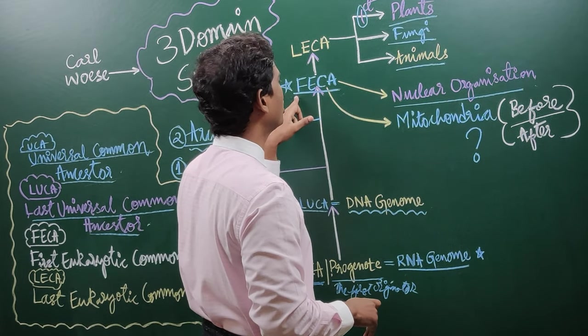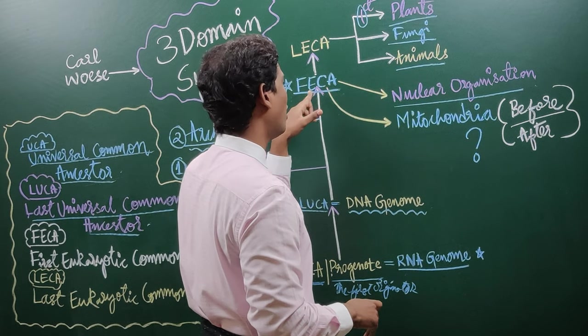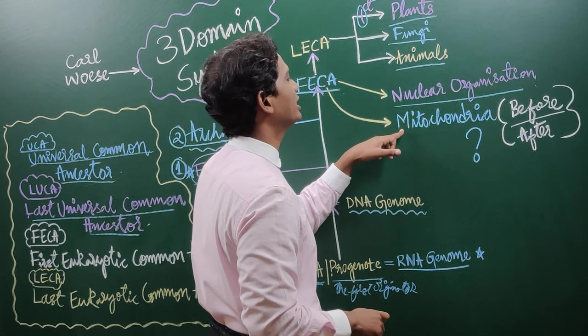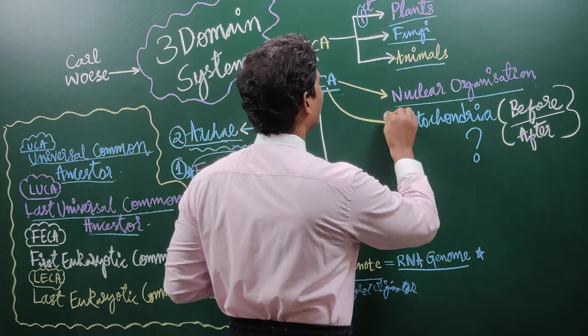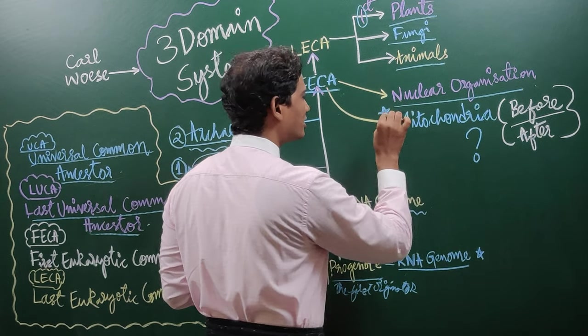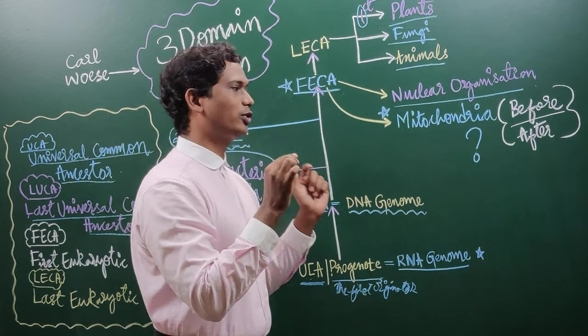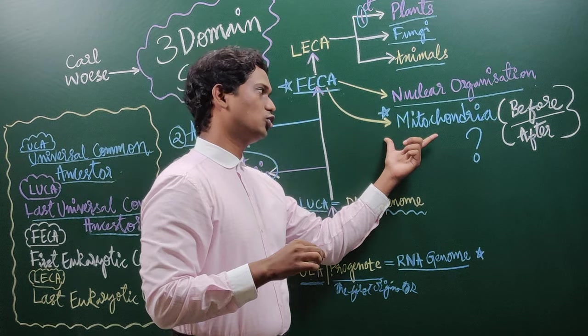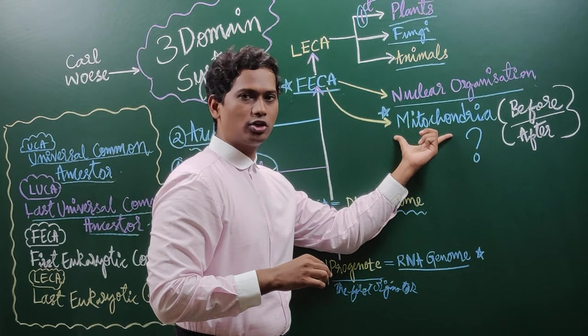This we understood. From here nucleus came into picture. After this nucleus came into picture, there is a debatable point here. What scientists say is mitochondria, the first eukaryotic cell was having mitochondria.